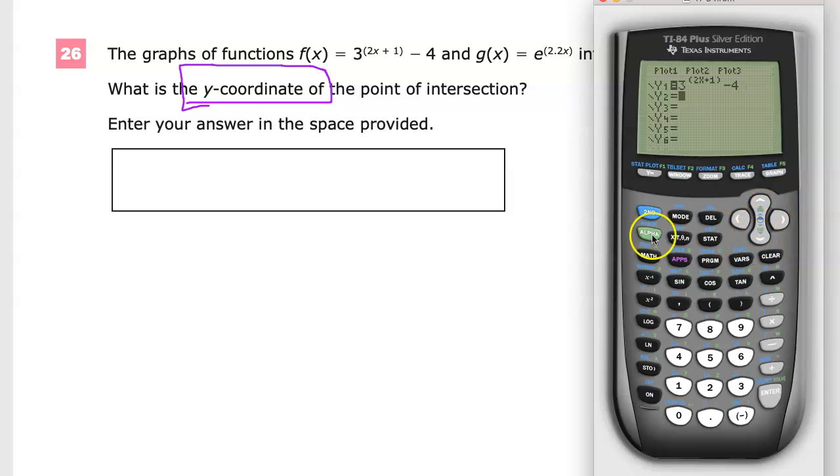For the other one, you'll just hit the E constant, which is here. I hit second and hit the natural log button, 2.2x. And now I can graph them.